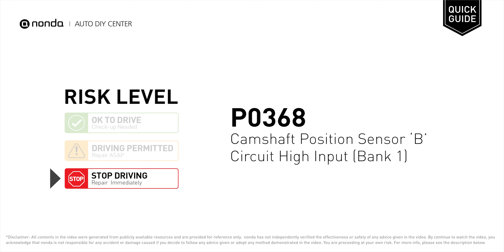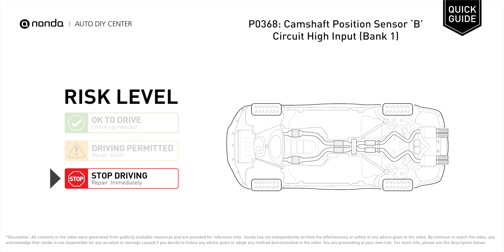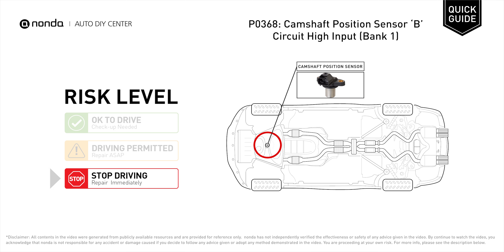P0368 is a diagnostic trouble code for camshaft position sensor B circuit high input at bank 1. Under this circumstance, stop driving and repair your vehicle immediately. P0368 means that the engine control module detected the engine camshaft position sensor circuit is not within specifications.